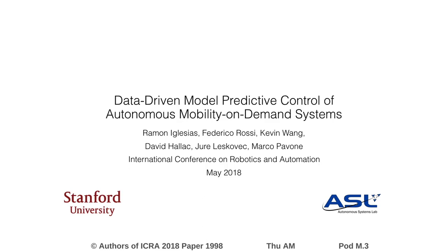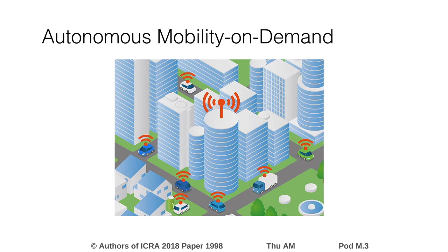We call ride-sharing systems with self-driving cars autonomous mobility on demand, or AAMOD. Presumably, AAMOD operators can preemptively dispatch empty self-driving vehicles to areas where demand might surprise the supply, improving the quality of service. How do you design a control strategy that does this effectively?